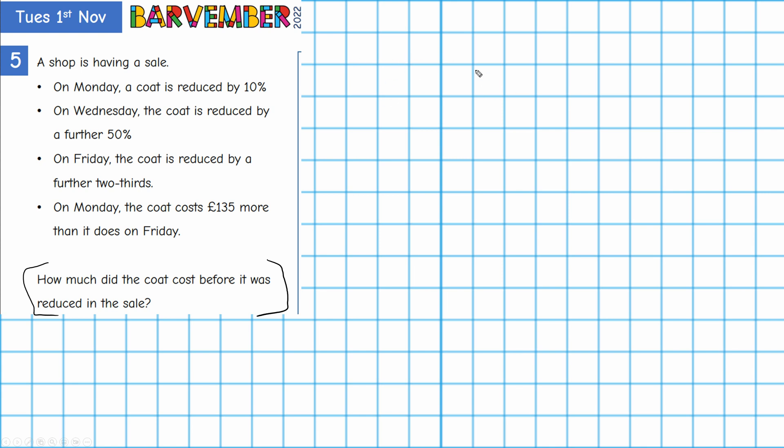Now I am using squared paper because I can't draw for toffee. Of course you could do exactly the same thing on blank paper, you would just draw your own parts. But what I'm going to do is draw a bar that has 10 equal parts because I'm going to start by reducing by 10%. So I'm just going to draw a bar that has 10 equal parts.